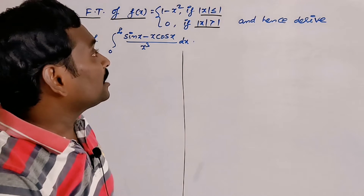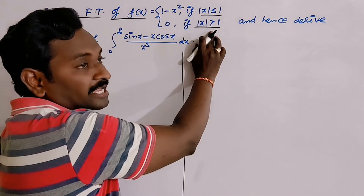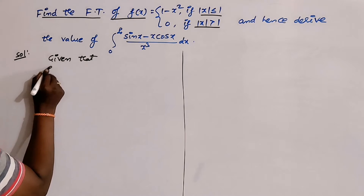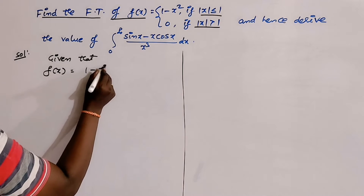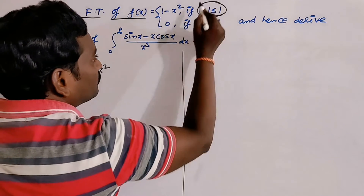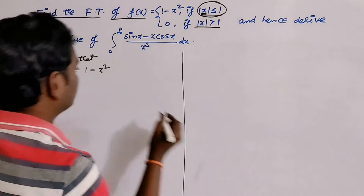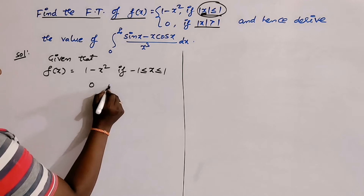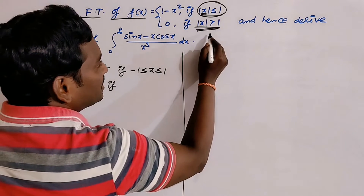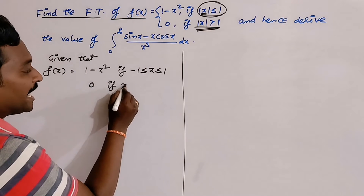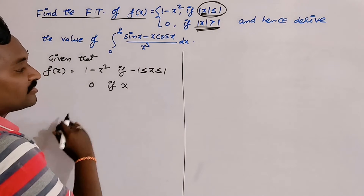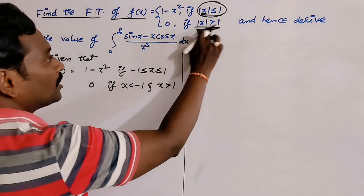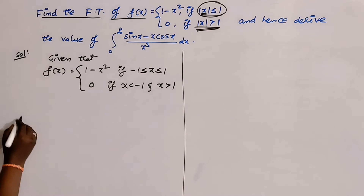First, we have to rewrite the conditions in another way. Given that f(x) = 1 minus x², where |x| ≤ 1 means x should lie between minus 1 and plus 1, i.e., -1 ≤ x ≤ +1. And 0 where |x| > 1 means x < -1 or x > +1.